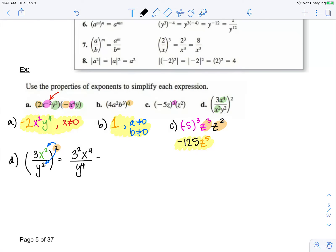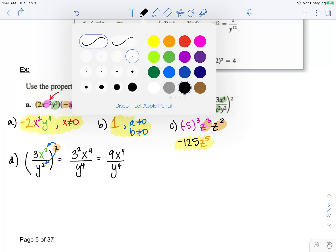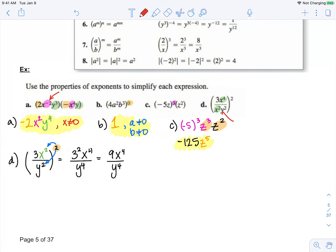So now I have 9x to the 4th over y to the 4th. But remember, this is going to have some exclusions because we don't want our denominator to be zero. So therefore, x cannot equal zero and y cannot equal zero. So therefore, we don't have any undefined values along the way.